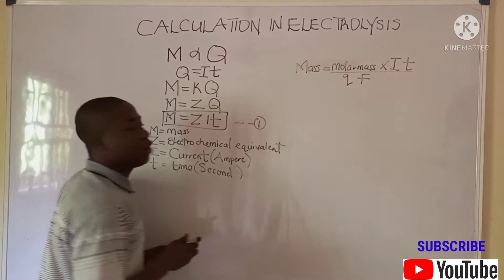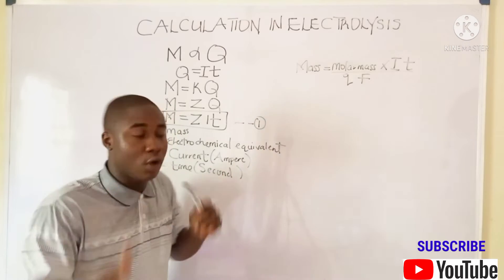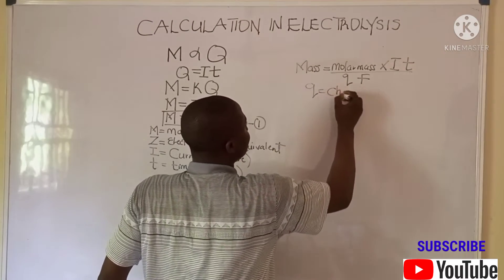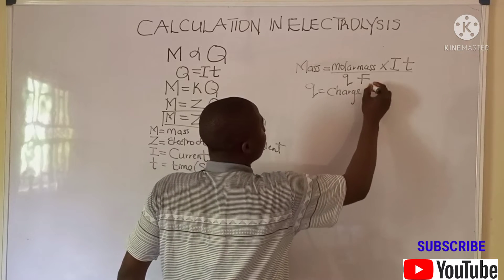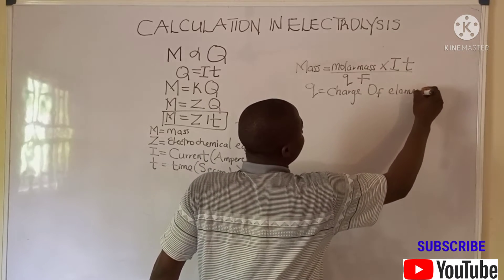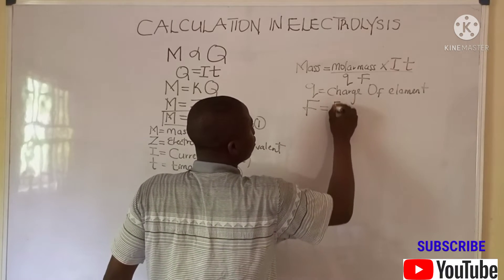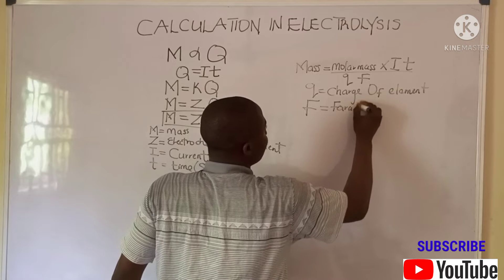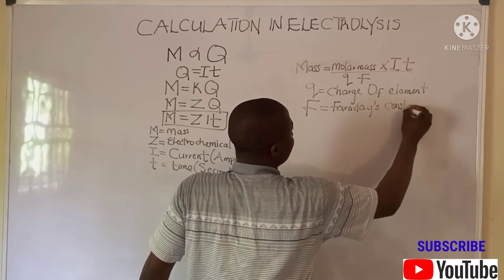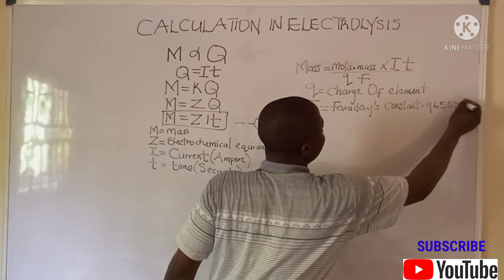You ask yourself: what is q and what is F? Q is the charge of the element, and F is Faraday's constant. Faraday's constant is 96,500 coulombs.